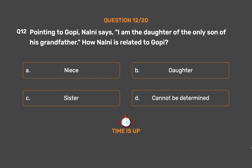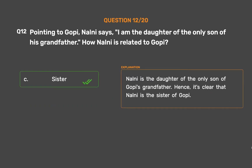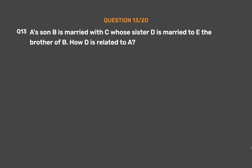The correct answer is Option C: Sister. Nalini is the daughter of the only son of Gopi's grandfather. Hence, it is clear that Nalini is the sister of Gopi.